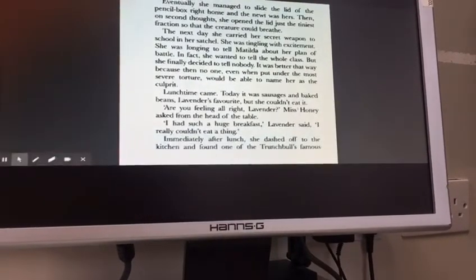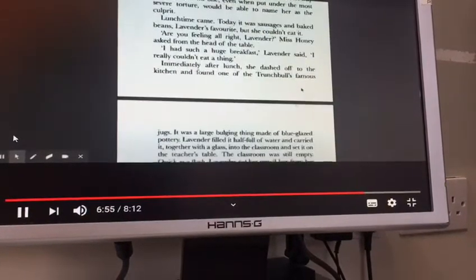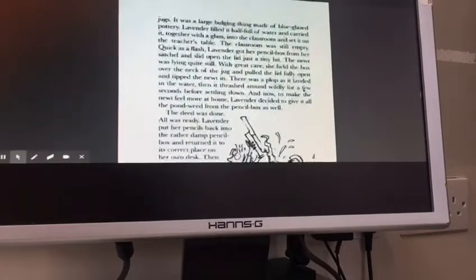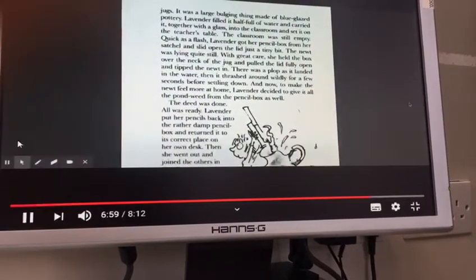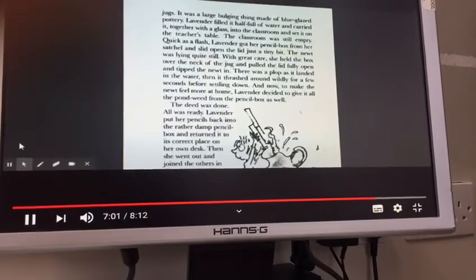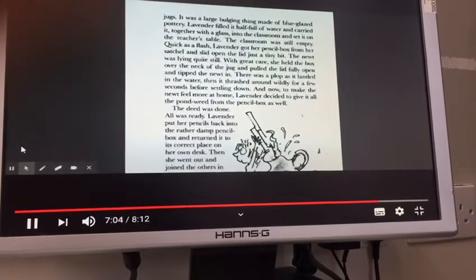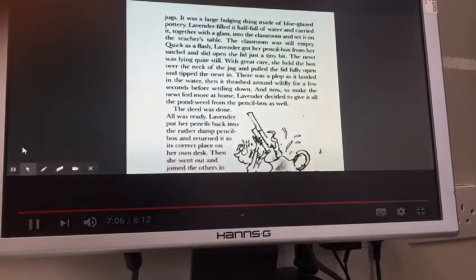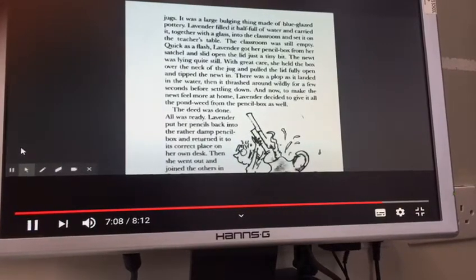Immediately after lunch, she dashed off to the kitchen and found one of the Trunchbull's famous jugs. It was a large bulging thing made of blue-glazed pottery. Lavender filled it half full of water and carried it, together with the glass, into the classroom and set it on the teacher's table.